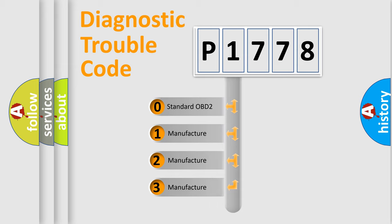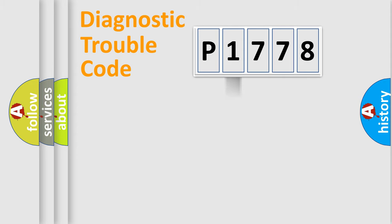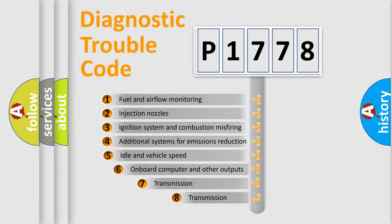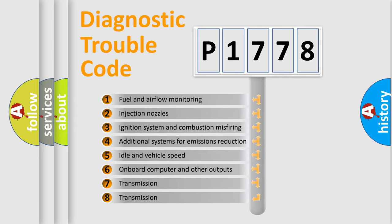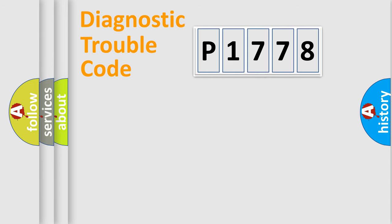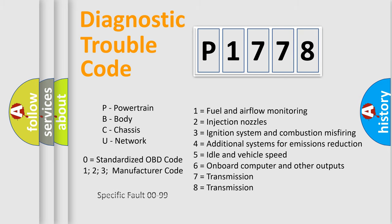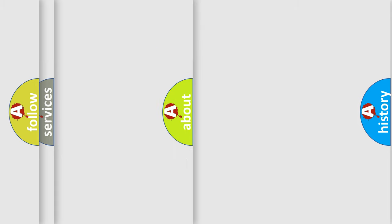If the second character is expressed as zero, it is a standardized error. In the case of numbers 1, 2, 3, it is a car-specific error. The third character specifies a subset of errors. The distribution shown is valid only for the standardized DTC code. Only the last two characters define the specific fault of the group. Let's not forget that such a division is valid only if the second character code is expressed by the number zero.